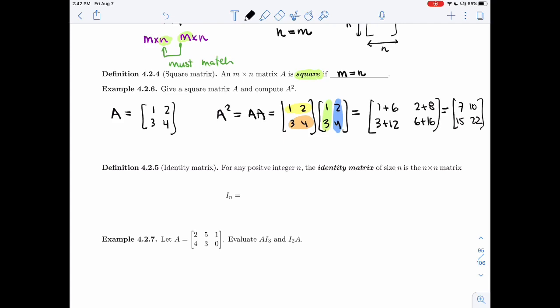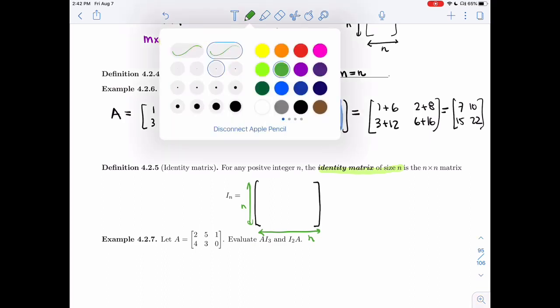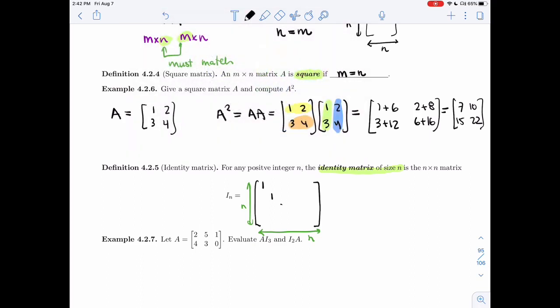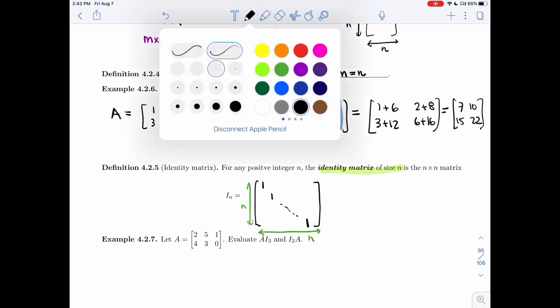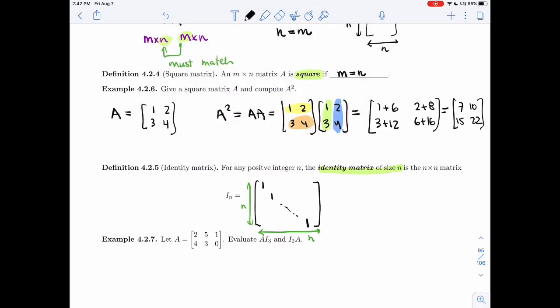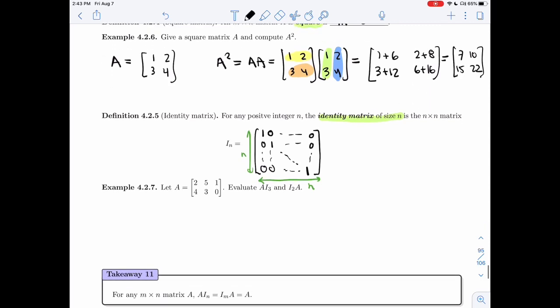There's one special square matrix that we'll use a lot this term. It's called the identity matrix. So for any positive integer N, the identity matrix of size N is an N by N matrix. So it has N columns and N rows. And it's going to have ones all along what we'll call the main diagonal. So it's going to have ones on the diagonal entries. And then all above and all below, I'm just going to have zeros. So everything else is a zero.